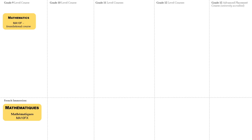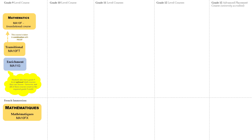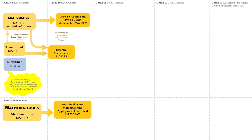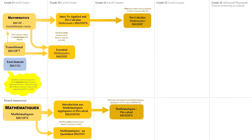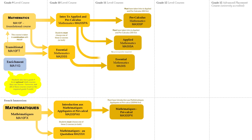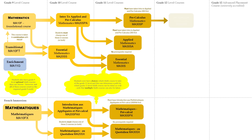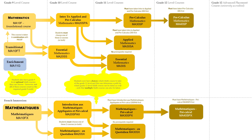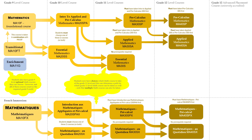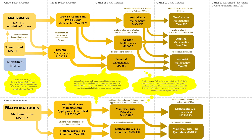Mathematics is a core subject for graduation that starts in Grade 9. Students also have Grade 9 level optional math courses; however, not all of these courses count as the required Grade 9 credit. Grade 10 mathematics courses offer choices. Grade 11 mathematics courses offer choices based on prerequisite courses taken in Grade 10. Students have choices as to which math course to take at the Grade 11 level, and this can determine a path for which Grade 12 level math courses can be taken as well. Note that multiple math courses can also be taken.